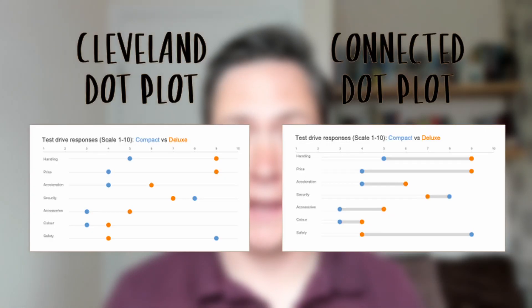In today's video I'm going to show you how to make two different types of dot plots in Excel. Now dot plots aren't built-in chart types in Excel so we do need to be a little creative to make them. These are the two we are going to make today: a Cleveland dot plot and a connected dot plot.